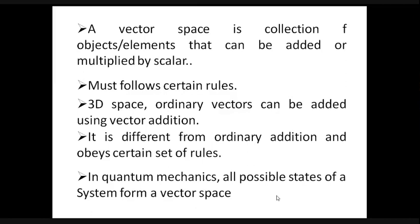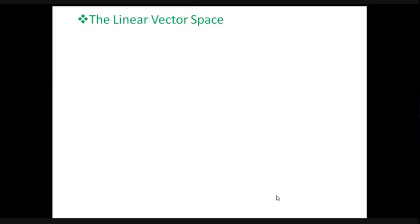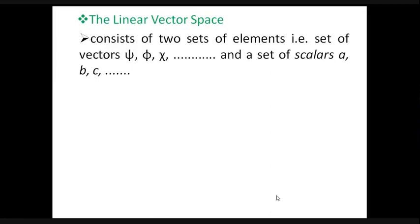In quantum mechanics, all possible states of a system form a vector space. In the next slide we will discuss the vector spaces we must understand in quantum mechanics — that is, the linear vector space. In a linear vector space, as we said earlier, it is a collection of a set of elements. It consists of two sets of elements.